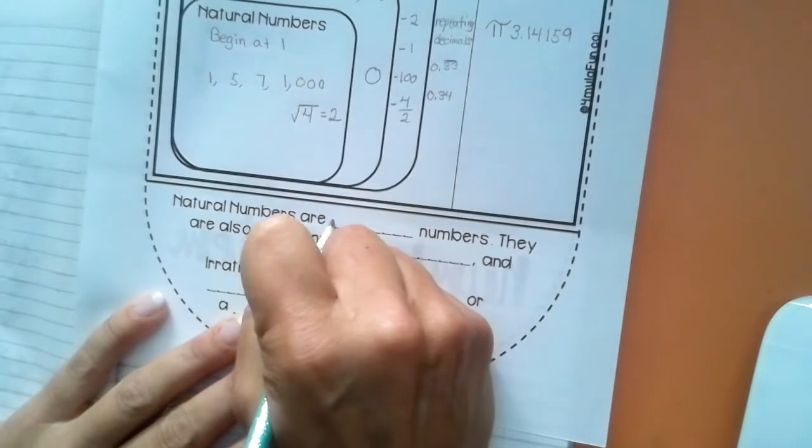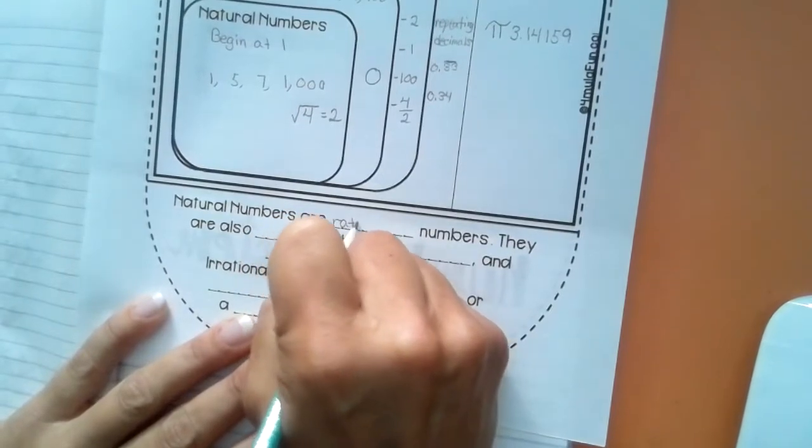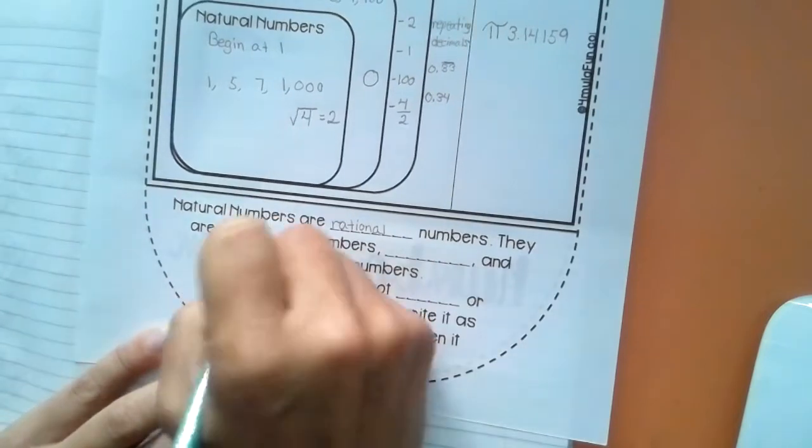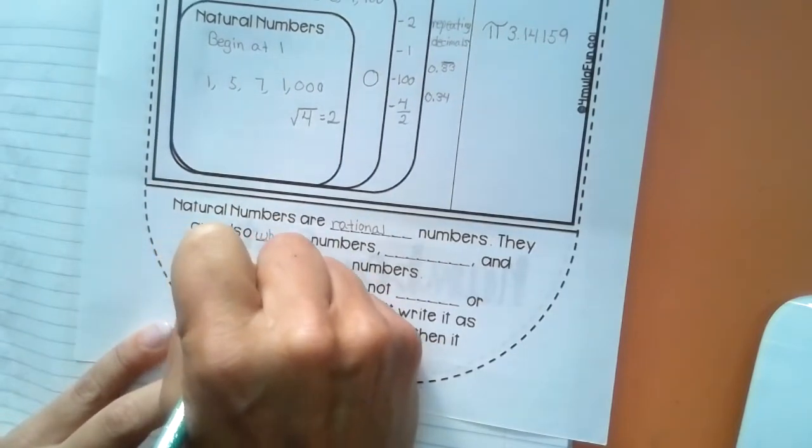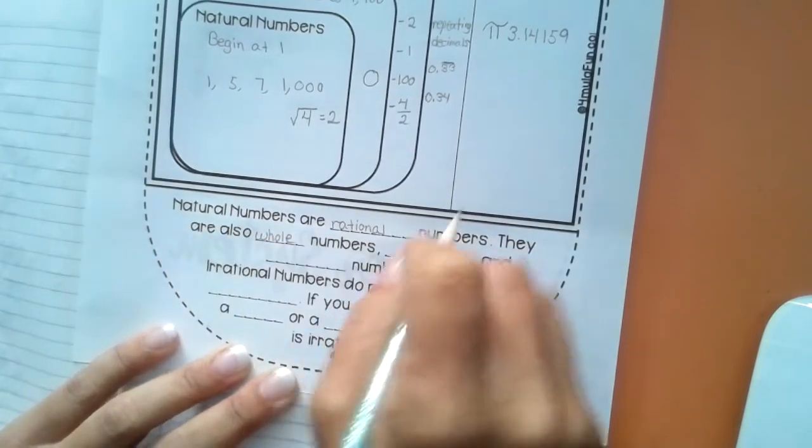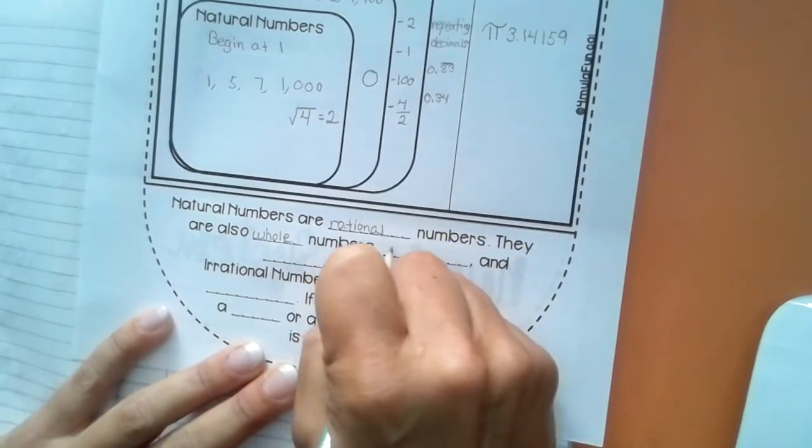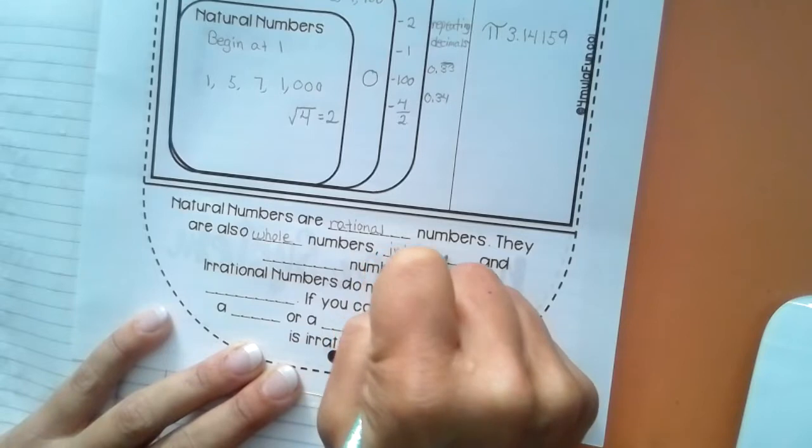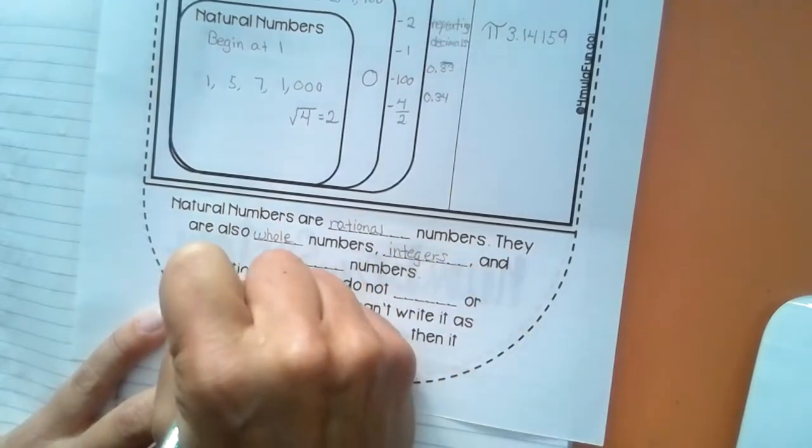Natural numbers are rational numbers. They are also whole numbers, integers, and counting numbers.